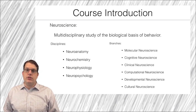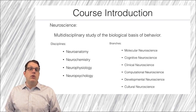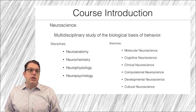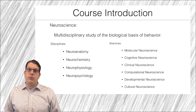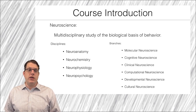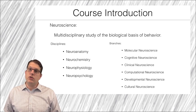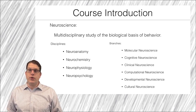Neuroscience also has many different branches, including molecular neuroscience, cognitive neuroscience, clinical neuroscience, computational neuroscience, developmental neuroscience, and cultural neuroscience, to name just a few.